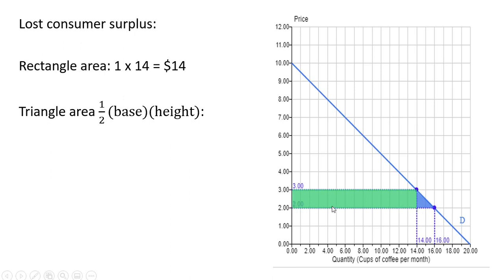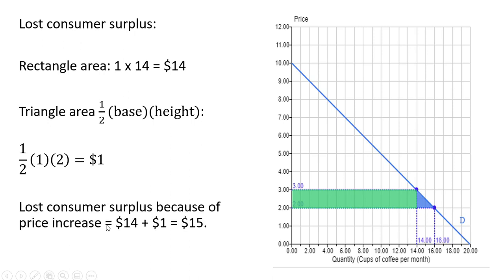The triangle area is ½ base times height. We have a height of 3 - 2 = 1 and a base of 16 - 14 = 2, so ½ × 1 × 2 = $1. The lost consumer surplus because of the price increase is 14 + 1 = $15.